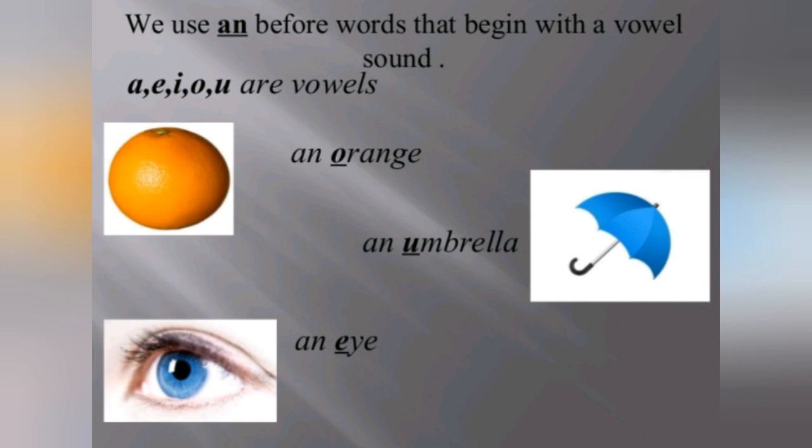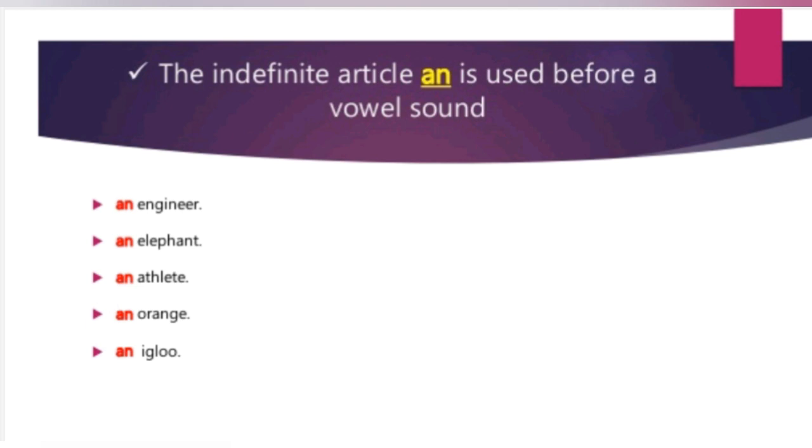Orange starts with o sound and that is a vowel, so an orange. Umbrella, that is u, so we put an umbrella. I, an eye. The indefinite article an is used before a vowel sound.